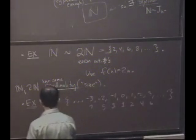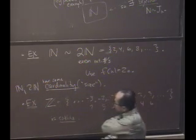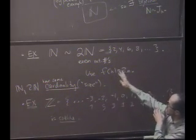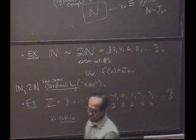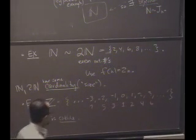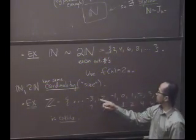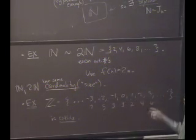So, Z, in fact, is countable. Oh, really? Okay. Z is countable. 2N is countable. The set of even integers is also countable. Can you see how to show that the even integers, minus 6, minus 4, minus 2, 0, 2, 4, 6, is going to be countable.